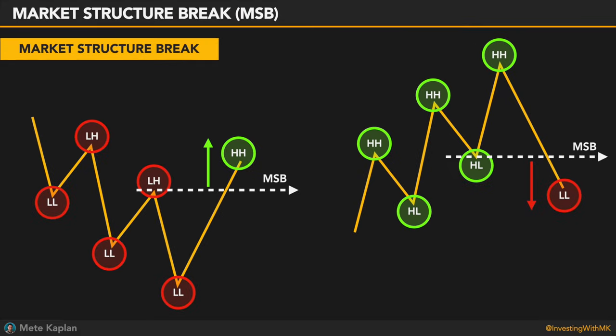This is how simple it is to identify market structure breaks. However, there are two types of MSB — strong and weak.